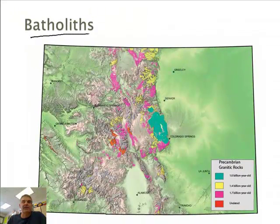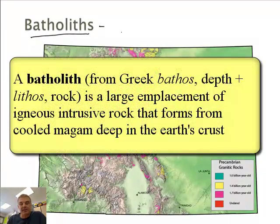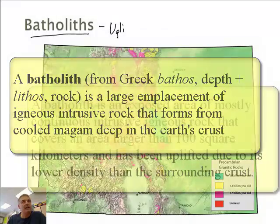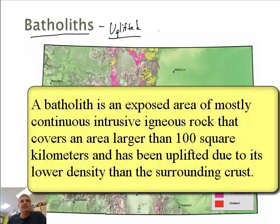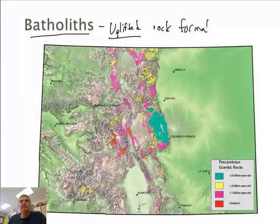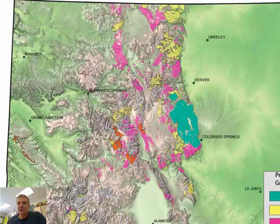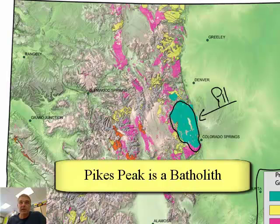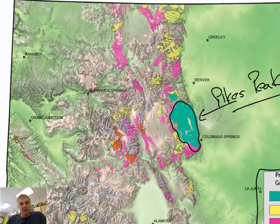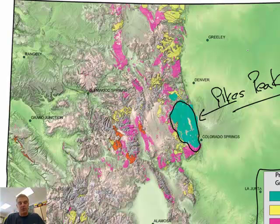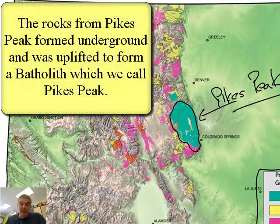Let's talk about what a batholith is. A batholith is an uplifted rock formation. You can see different batholiths on the map in different colors — some with known ages and some without. You might notice there's a big batholith near Colorado Springs. That batholith is called Pikes Peak. Remember, Pikes Peak is made of granite, and granite was formed under the earth. It was liquid rock, the liquid turned into solid and made crystals, and then at some point it got uplifted — and you get the Pikes Peak batholith.